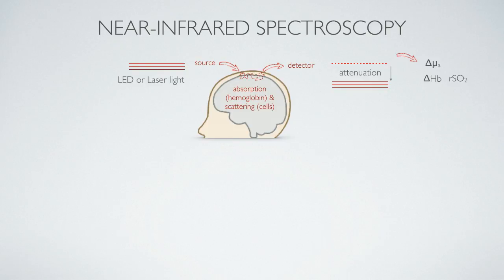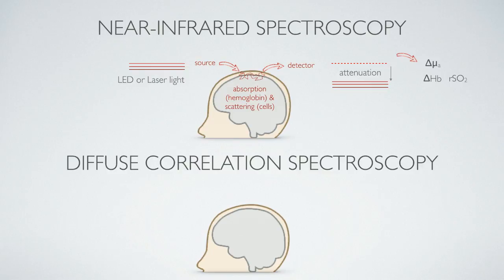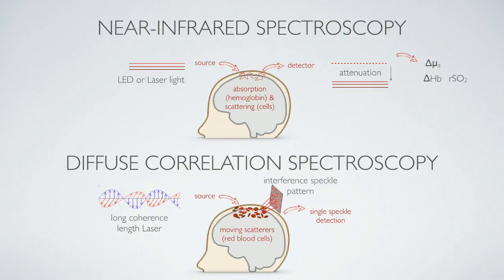If you use the Beer-Lambert law in CW mode, we can get changes in absorption, and at multiple wavelengths we get changes in hemoglobin. Diffuse correlation spectroscopy is not new but growing rapidly — it's a near-infrared spectroscopy technology that, instead of measuring just attenuation, measures loss of coherence or correlation by using a long-coherence-length laser and a single speckle detector to measure fluctuations in the speckle pattern. By measuring the temporal autocorrelation function and its decay, you get a measure proportional to blood flow.